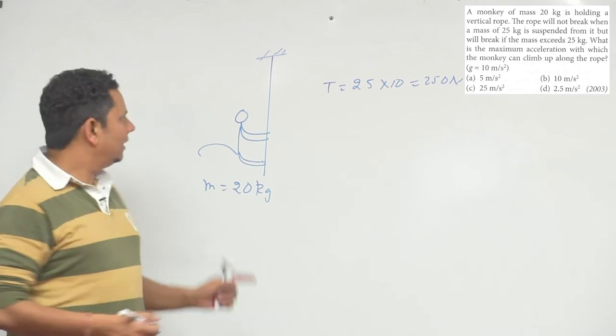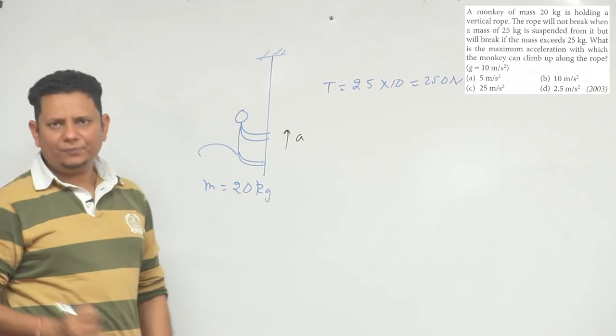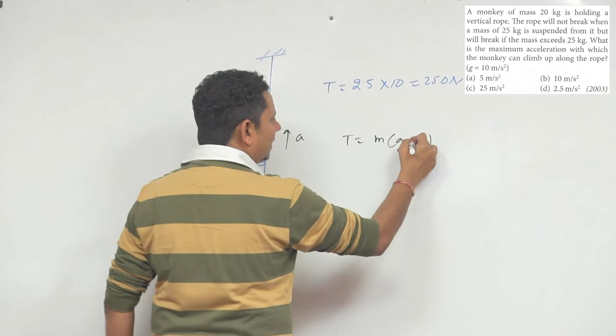We will find how much acceleration the monkey can have safely before the rope breaks. Now, simple. T will be equal to m times (g plus a).